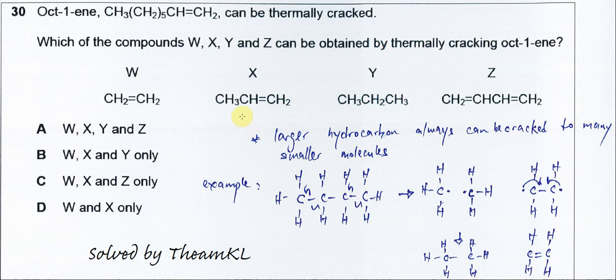Just give you an example of how the thermal cracking happens. Let's say we have a butane. When butane undergoes thermal cracking, the bond breaking can randomly happen at any place.